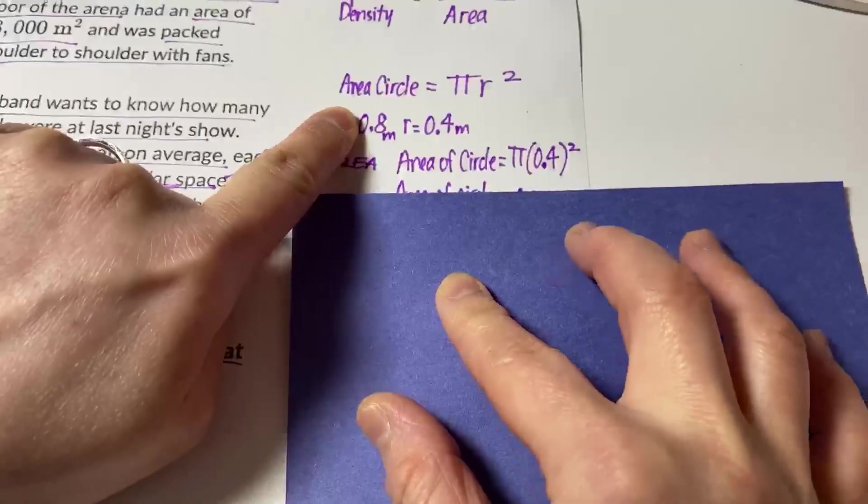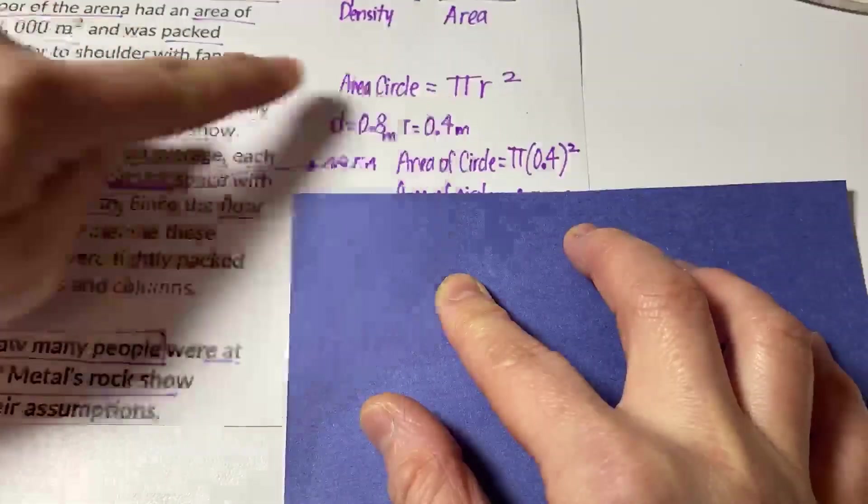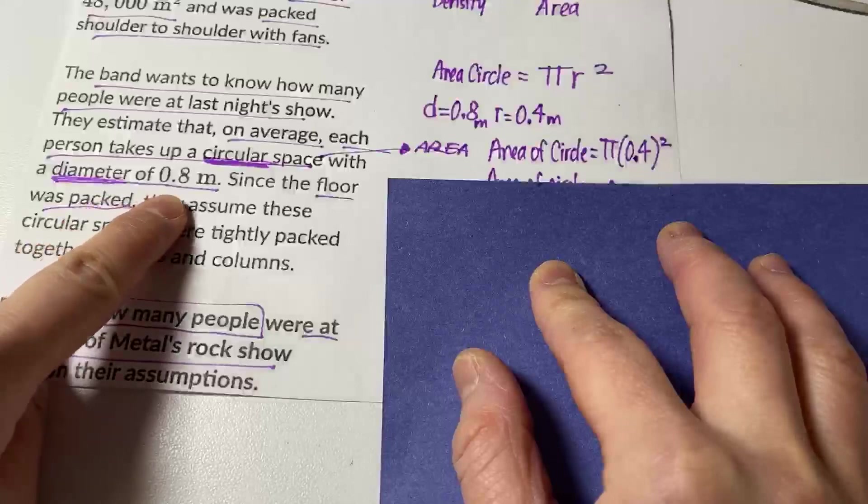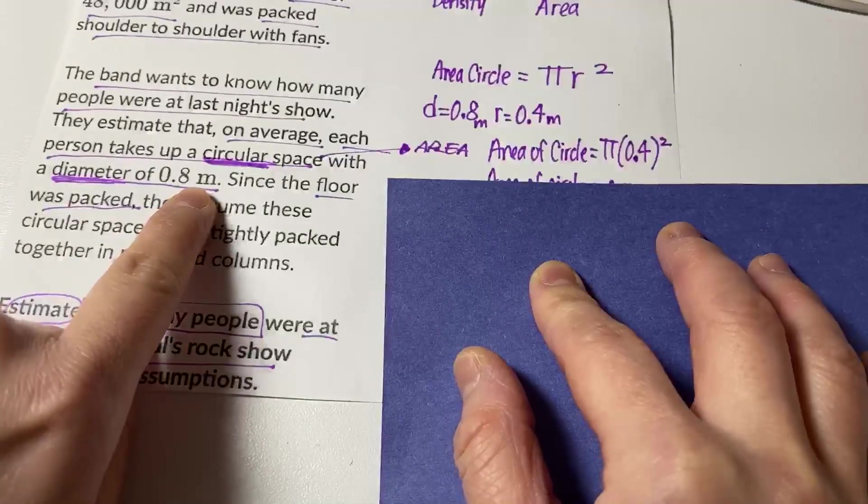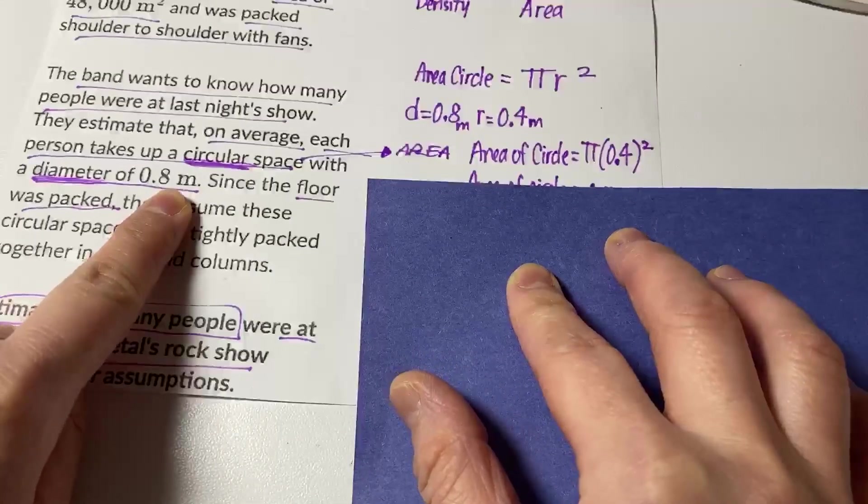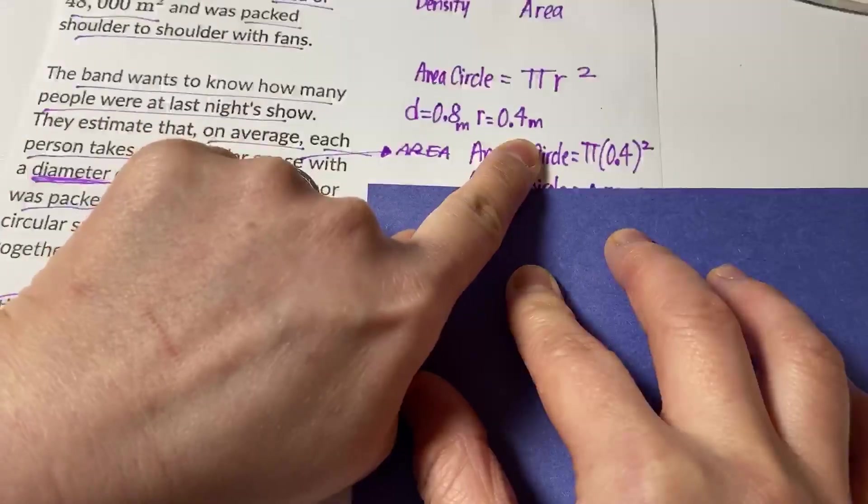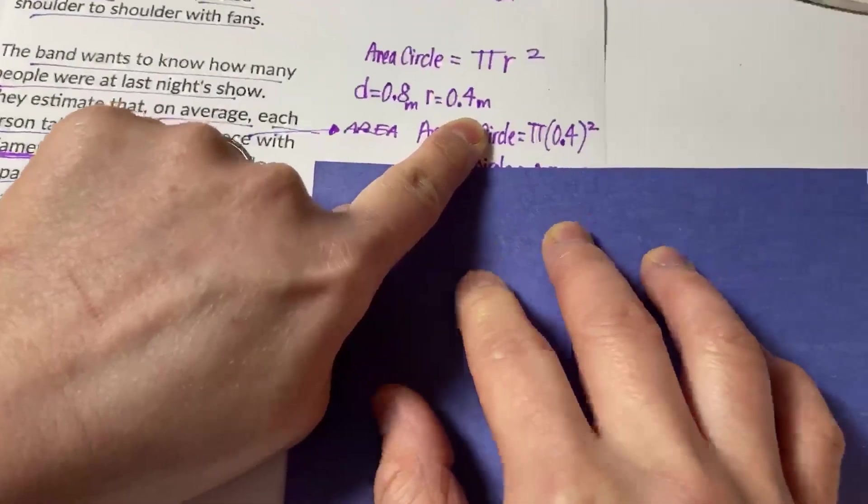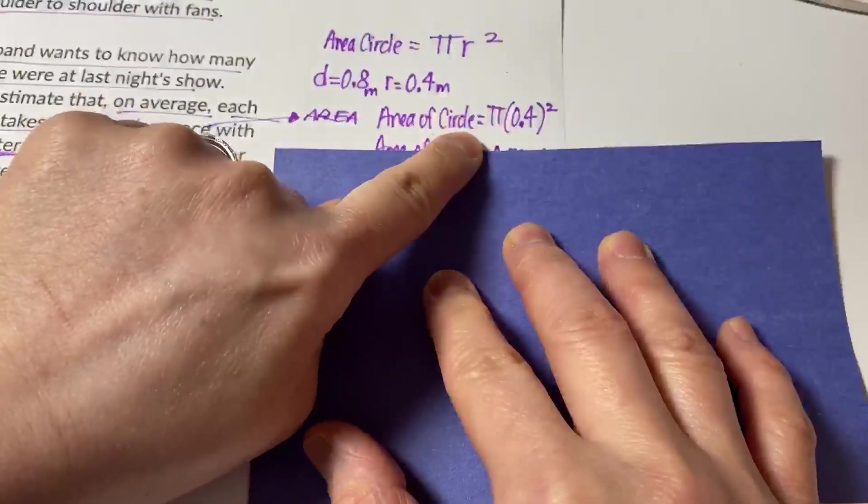So once again, the area of a circle is pi r squared. Well, they gave us the diameter of 0.8 meters, and so the radius is half. So we got 0.4 meters. When we plug that into the area formula...